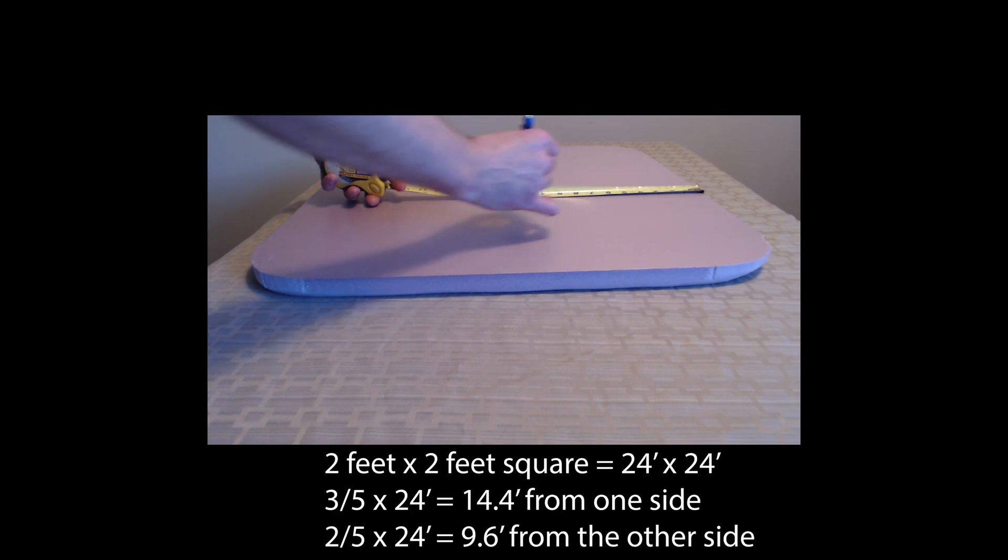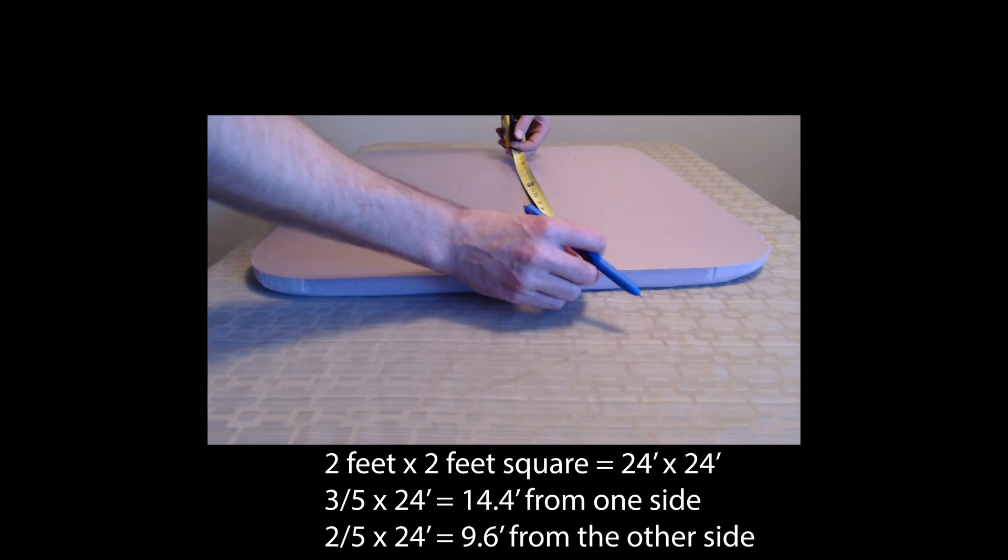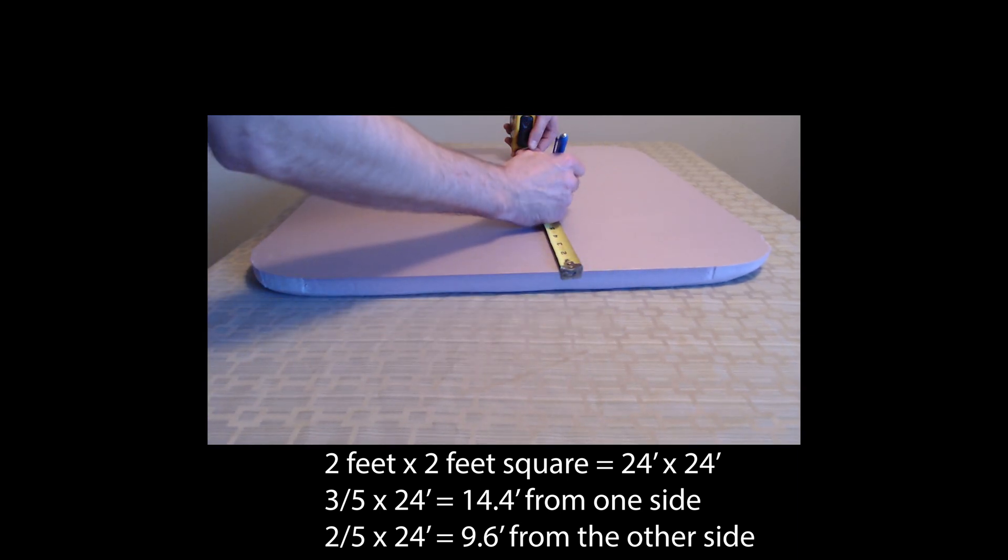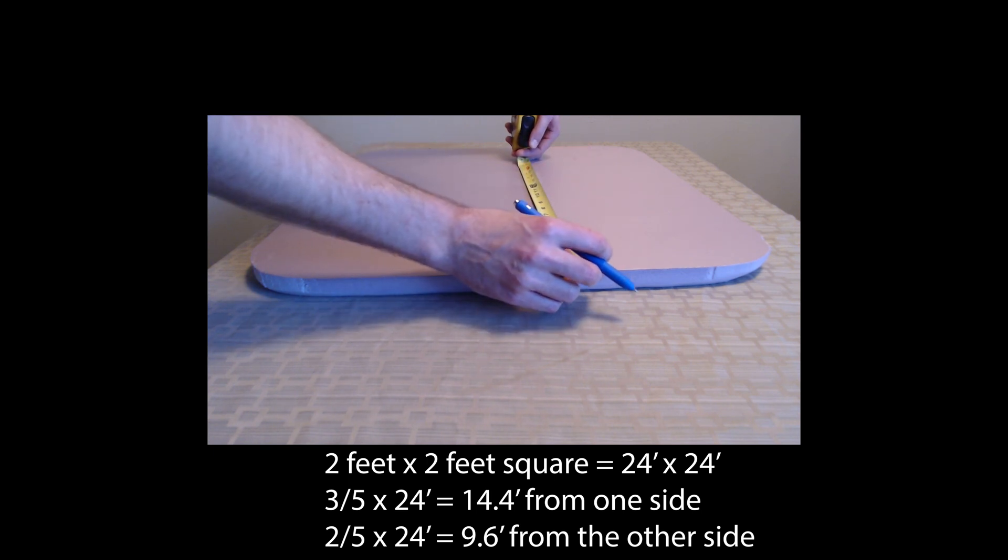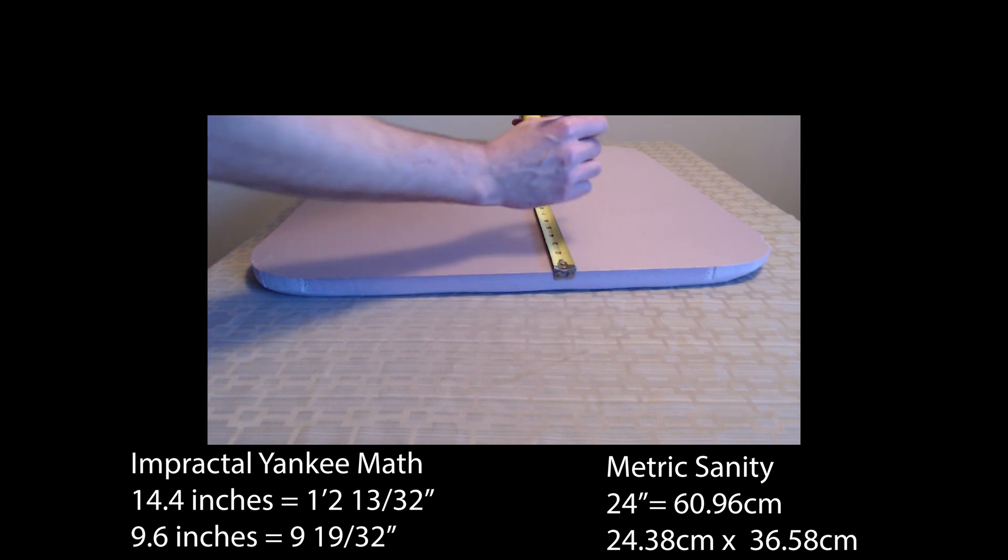This is a two by two square or 24 inch by 24 inch square. So three-fifths of 24 is 14.4. Two-fifths of 24 is 9.6. So you're going to want to measure that out. Now if you're using practical Yankee math, 14.4 inches is one foot two inch and 13/32. 9.6 inches is 9 and 19/32. Metric sanity: just go 24 centimeters from one side about 37 centimeters from the other and you'll be all set. So once you've got that marked out.